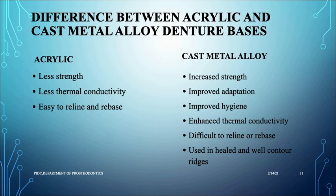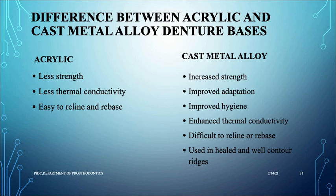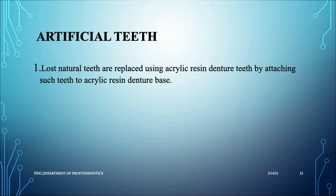Acrylic resin has less strength, less thermal conductivity, is easy to reline and rebase, and is lighter. Cast metal alloys have greater strength, better thermal conductivity, better adaptation and hygiene, and are used on well-contoured healed ridges, but cannot be relined or rebased. Artificial teeth — acrylic teeth — are fused onto acrylic denture bases. On a metal alloy base, a small layer of acrylic is poured first onto which the artificial teeth are then placed and fused.